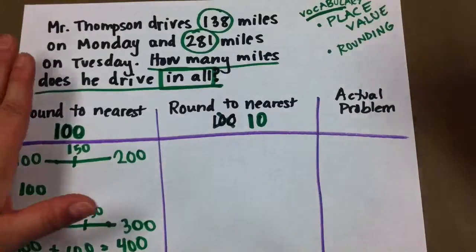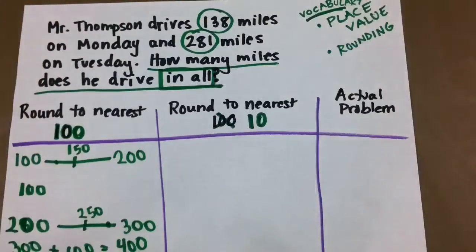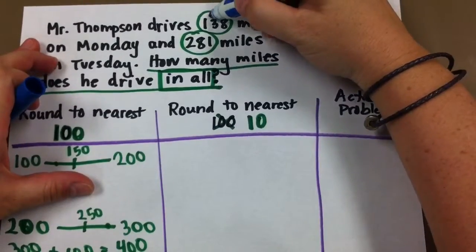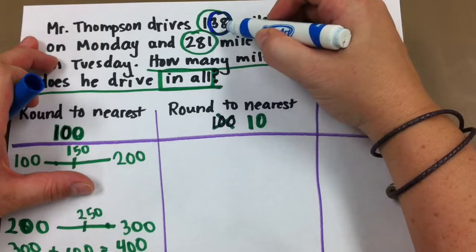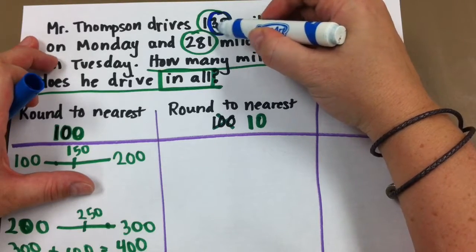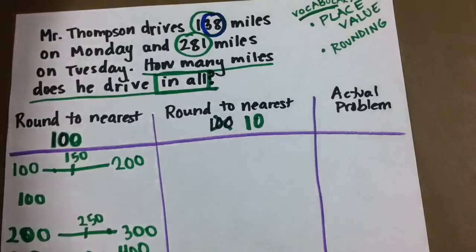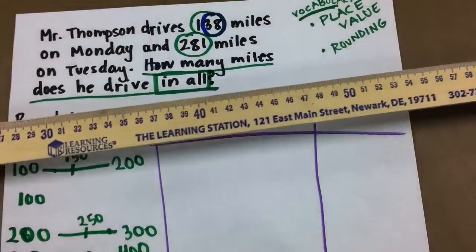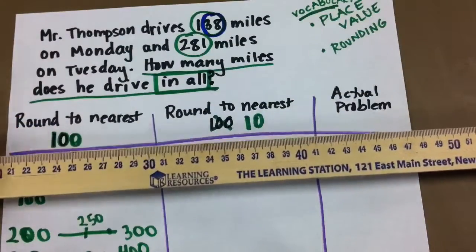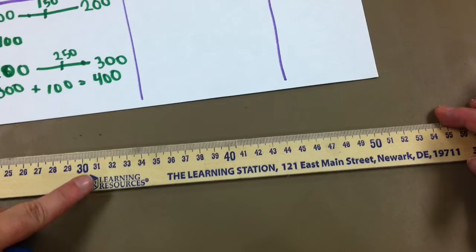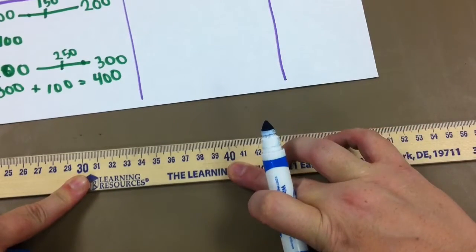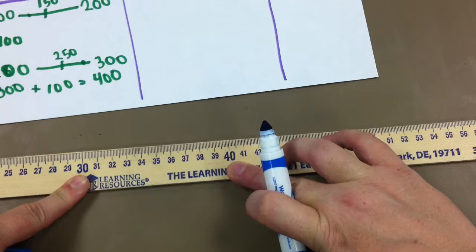Okay, so 138. We are looking at the important numbers here. 38. 3 and 8. Okay, so this is in our 10s, and this is in our 1s. So 38, that is in between. I'm going to use a yardstick this time.